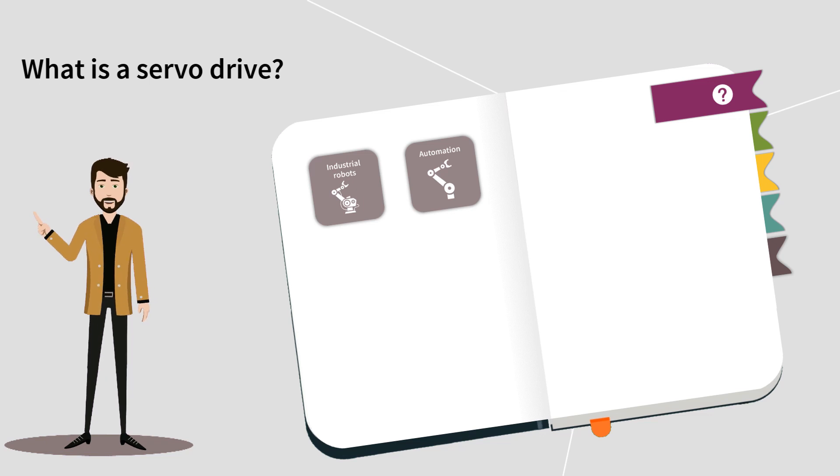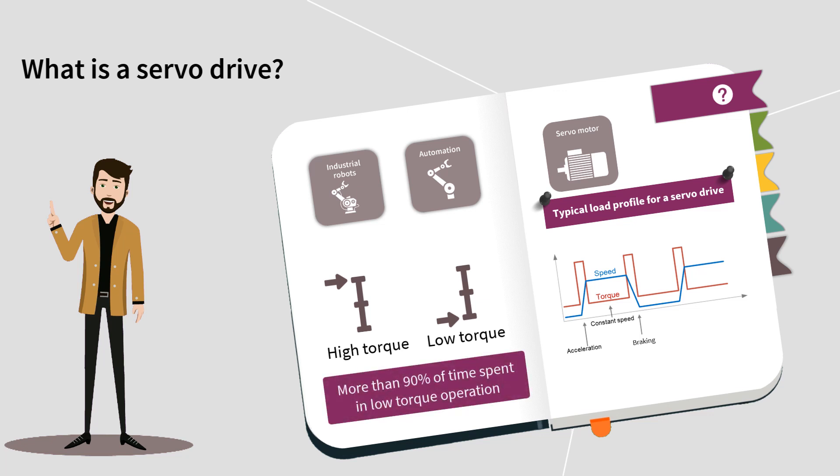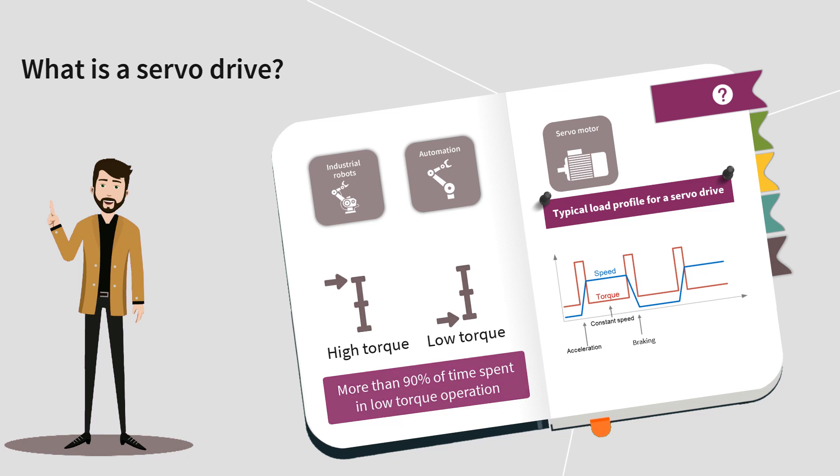Servo drives are widely used in industrial automation and robots, and they are characterized for having a typical load profile, which translates into a high torque or current in an acceleration and braking period, a low torque or current in a constant speed period, and more than 90% of time spent in low torque operation.